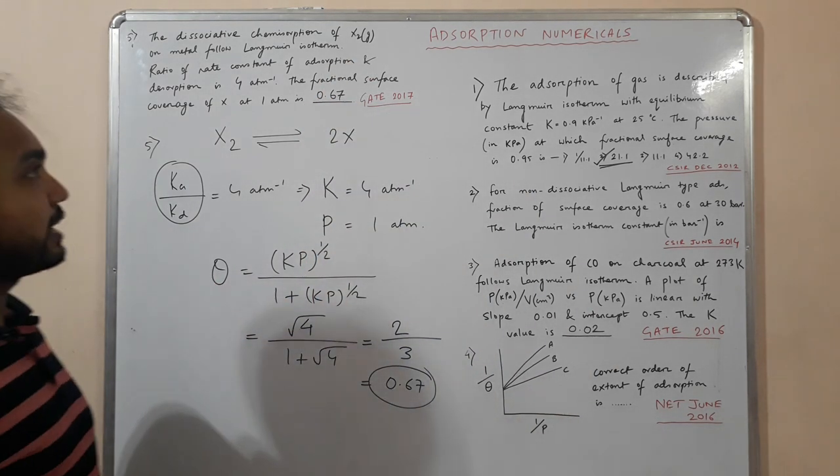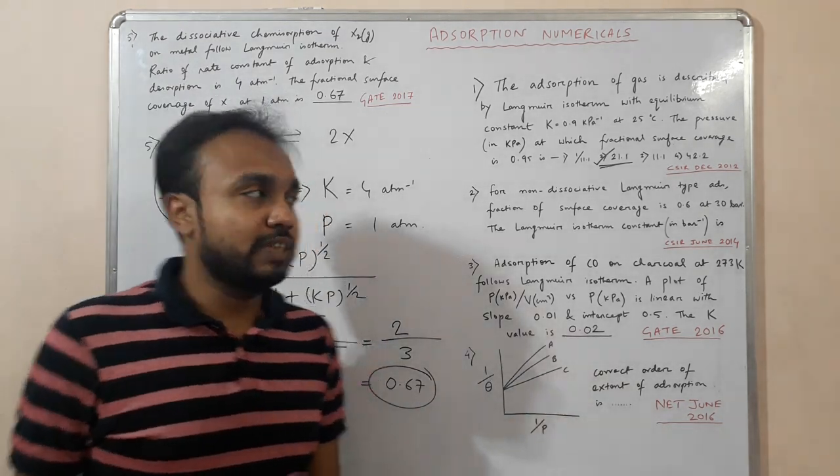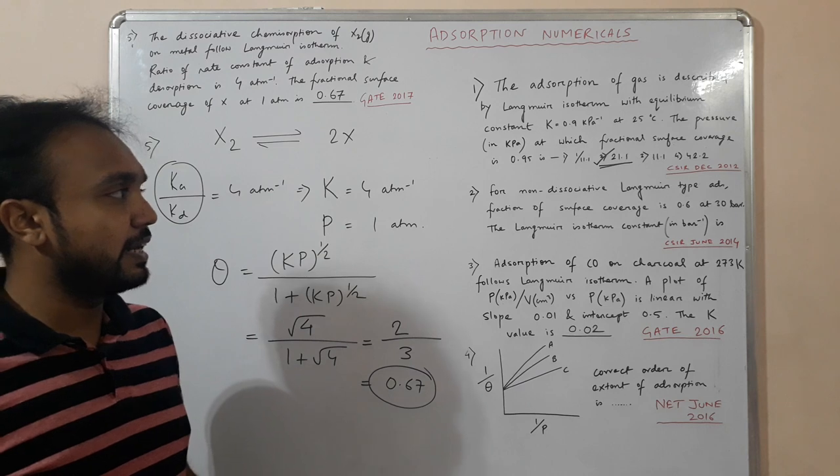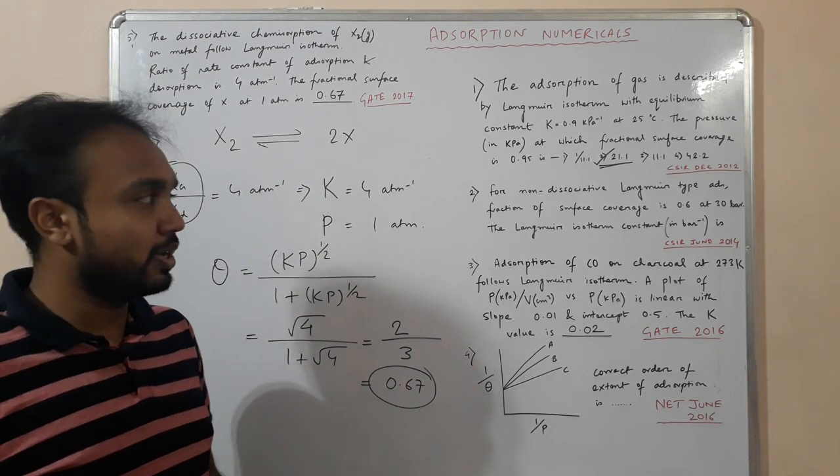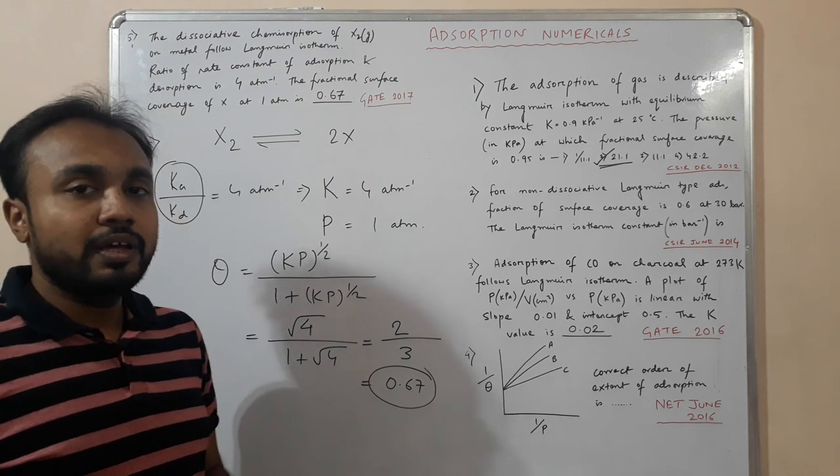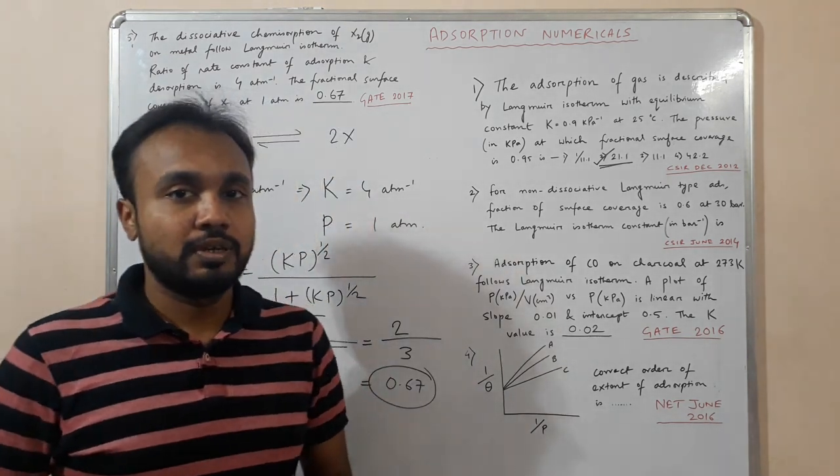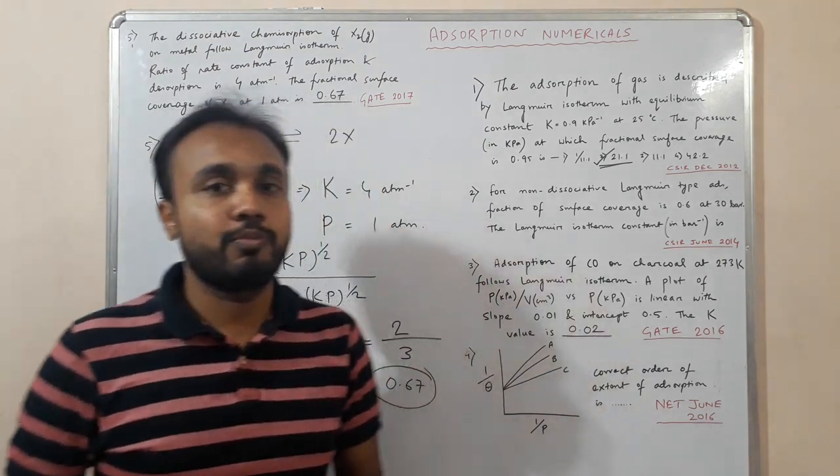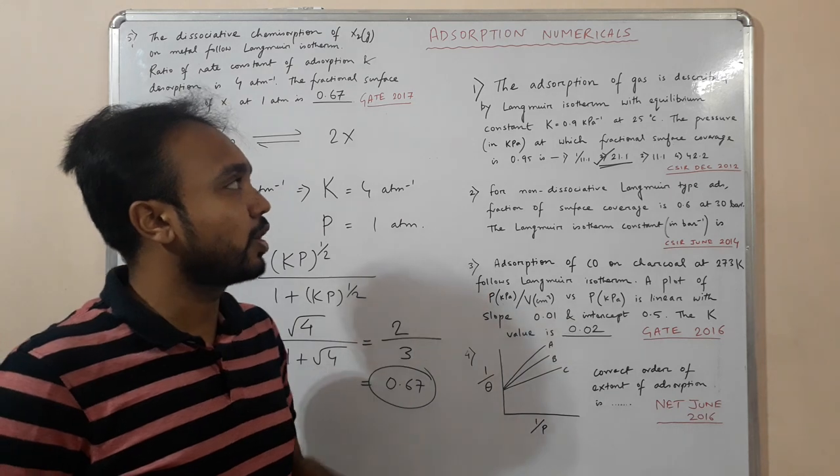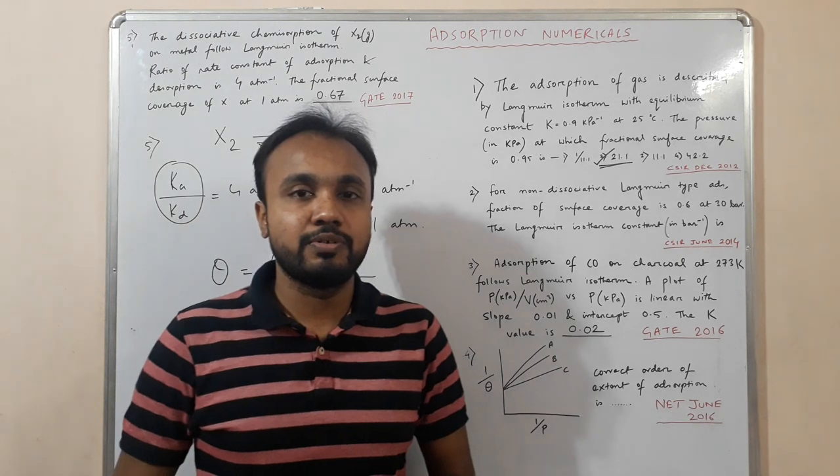So that is all for the numerical part. These are the types of numericals which are generally asked in the CSIR NET or GATE examinations. I know these are very easy numericals, but the one thing is that you should memorize all these formulas, especially the Langmuir type. You have to remember all the formulas so that you will be able to solve this type of easy numericals. Thanks for watching the video.